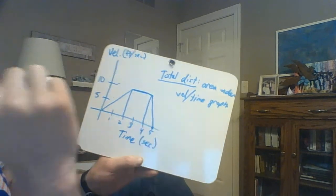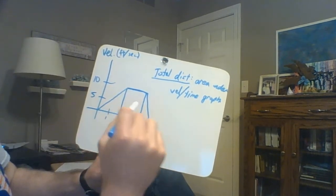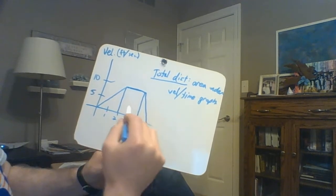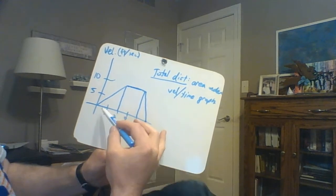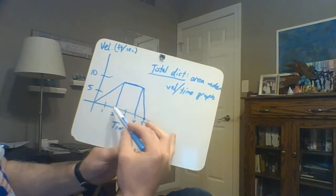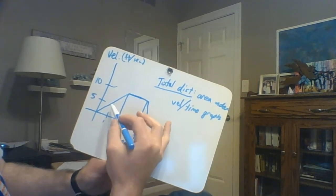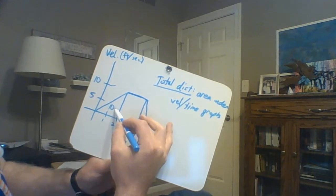So this would be pretty easy for us to calculate our total distance traveled. The easiest way here would be to break this up into some figures that we know, like a triangle and, sorry, 2 triangles and a rectangle. So in this case, we have a triangle. So 2 times 10 is 20. Divided by 2 makes this 10 square units.